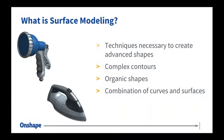The first question that often gets asked when I bring up this topic is: what is surface modeling? How is it different than anything else in Onshape? It is a bit of a different workflow, and it's typically involved when you have more complex shapes, more complex contours. You've heard the term advanced shapes or complex shapes — it's generally reserved for a more organic style of shapes.